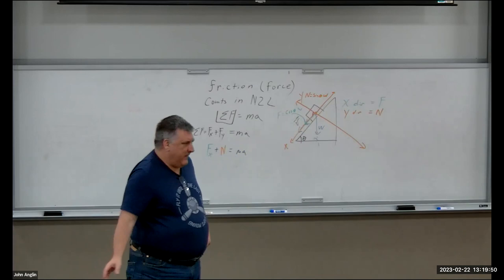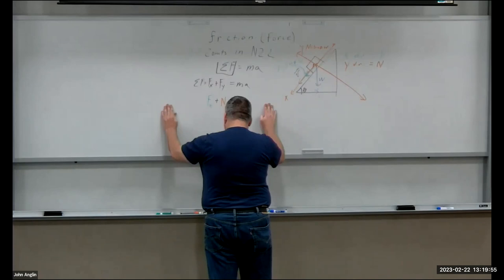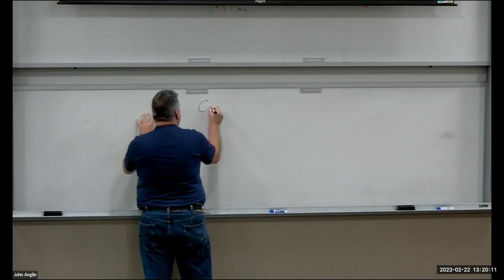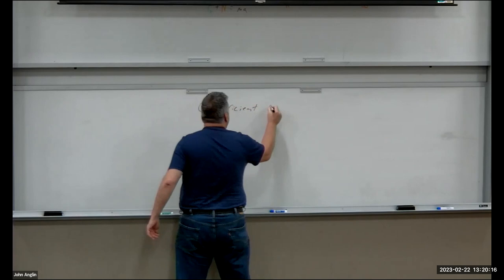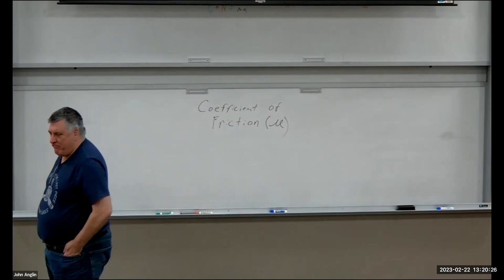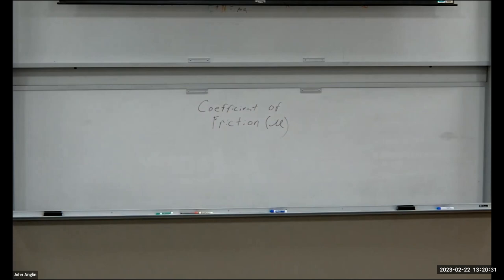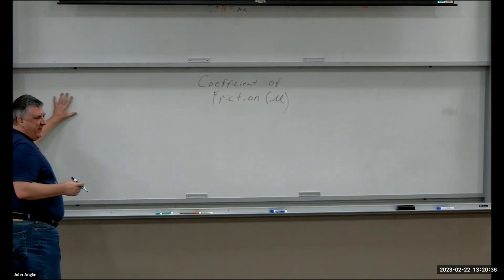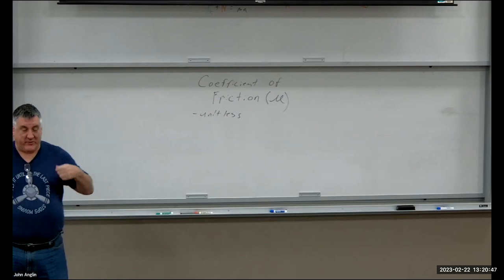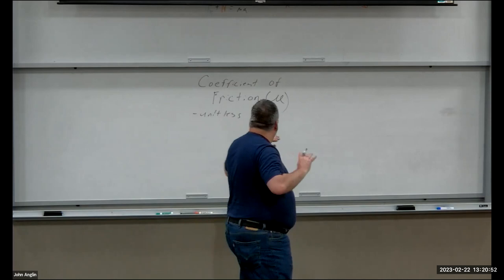How those surfaces interact with each other is characterized by something called the coefficient of friction — and that's where we use the Greek letter mu. The coefficient of friction is a unitless measurement that tells us the 'stickiness' of the surface. It's not given in meters, kilograms, or any unit — it's a purely unitless value.